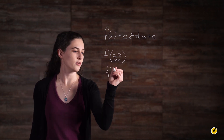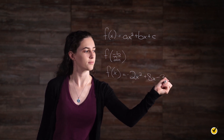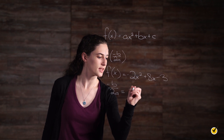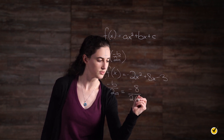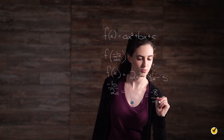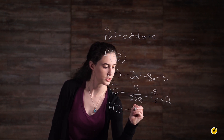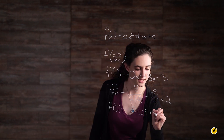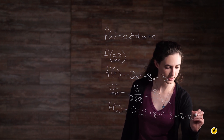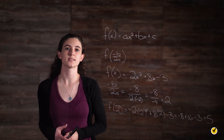For example, consider this function: f(x) = −2x² + 8x − 3. We compute negative b over 2a: that is negative 8 over 2 times negative 2, which equals negative 8 over negative 4, which gives us 2. Then we plug this in: f(2) = −2(2²) + 8(2) − 3, which gives us −8 + 16 − 3, which equals 5. Since a is negative, the range is all real numbers less than or equal to 5.